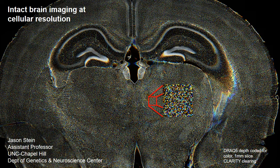Hi everyone, my name is Jason Stein. I'm an assistant professor in the Department of Genetics and in the Neuroscience Center. Our lab focuses generally on how genetic variation influences the structure and development of the brain. There are three billion base pairs in the human genome, and if you modify or change some of those base pairs you can influence the development of the brain and create risk for psychiatric diseases.